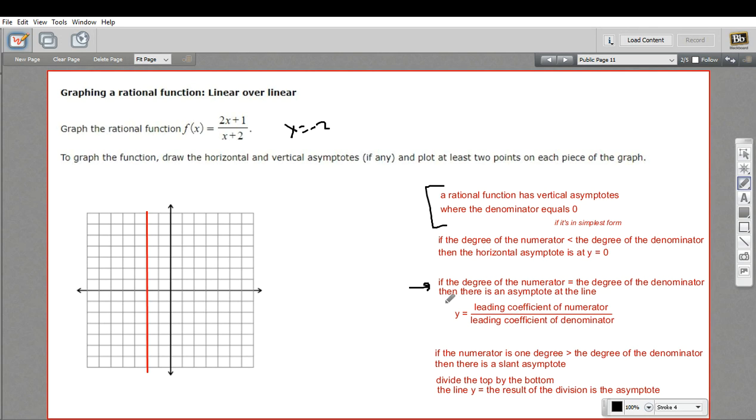So the leading coefficient, that's the coefficient, the number multiplied by the highest power of x. Highest power of x is just x. So it's 2 on top. And on the bottom, we just have x. So that's 1. So our line is y equals 2 over 1 or just y equals 2. So we'll plot that in there.